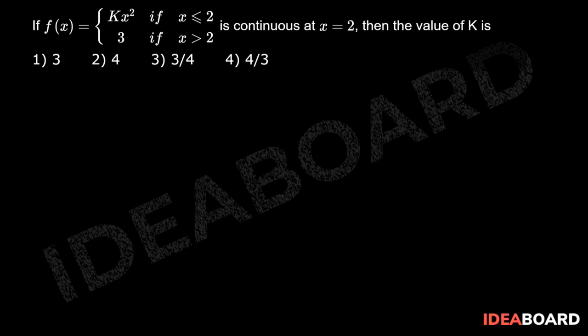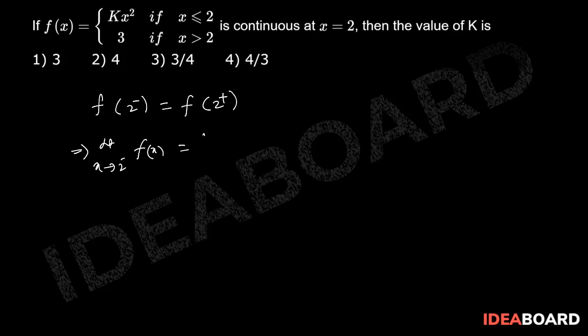Given that the function is continuous at x equals 2, we apply the condition: f(2⁻) equals f(2⁺), that implies limit as x tends to 2 from the left of f of x equals limit as x tends to 2 from the right of f of x.